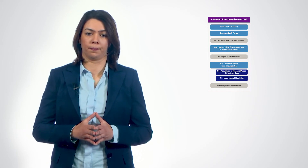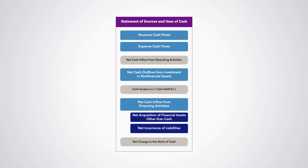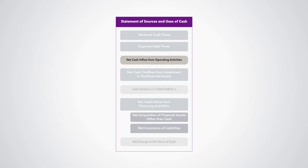Both balancing items are useful indicators for assessing the liquidity of the government or public sector. Two additional balancing items are the net cash inflow from operating activities and the net cash inflow from financing activities.